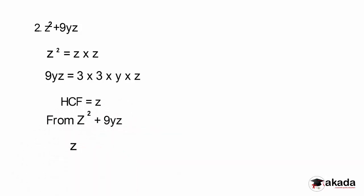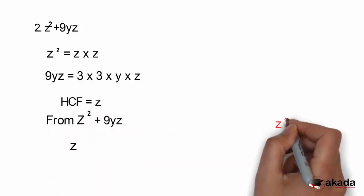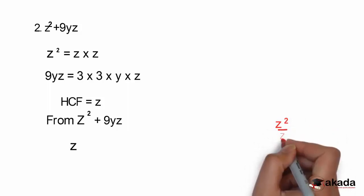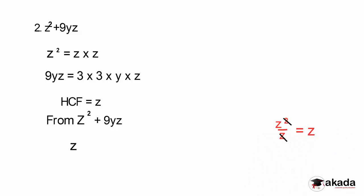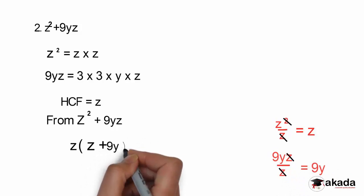From z squared over z, I cancel one of the z's, so I'm left with z. I have z into brackets z plus. Then 9yz over z gives 9y. So my answer is z into bracket z plus 9y.